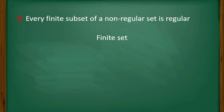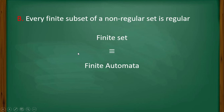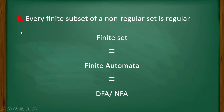Now option B: every finite subset of a non-regular set is regular. We know that if there is a finite set, there must exist some finite automata for it. And if it is possible to generate a finite automaton for a finite set, it must be an NFA or DFA, which means it must be a regular language. So every finite subset of a non-regular set is regular — this is true. Option B is the answer.